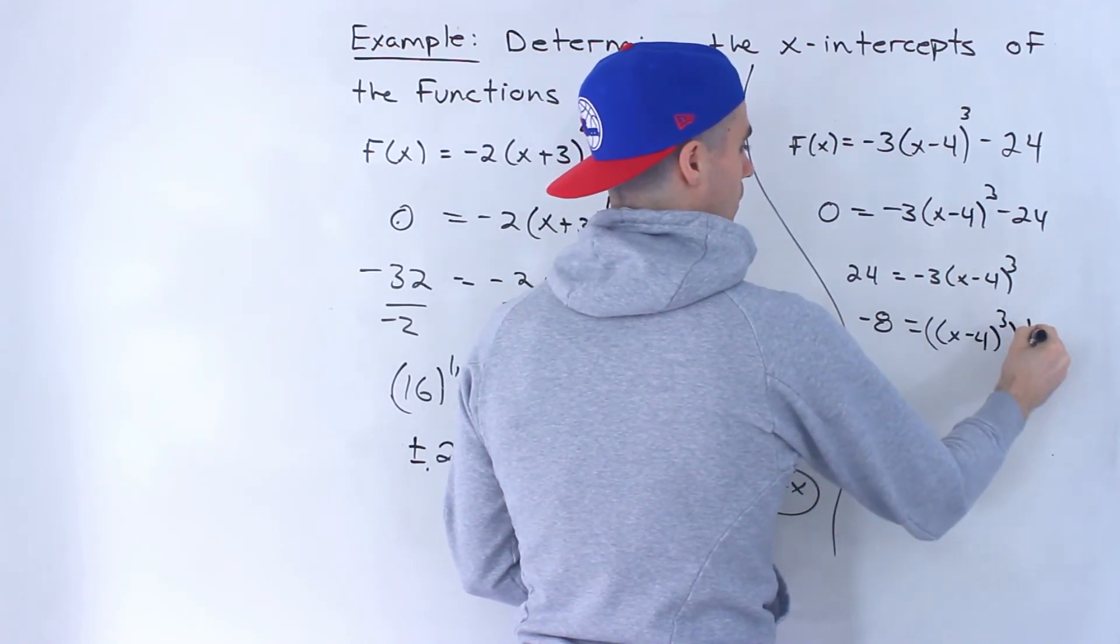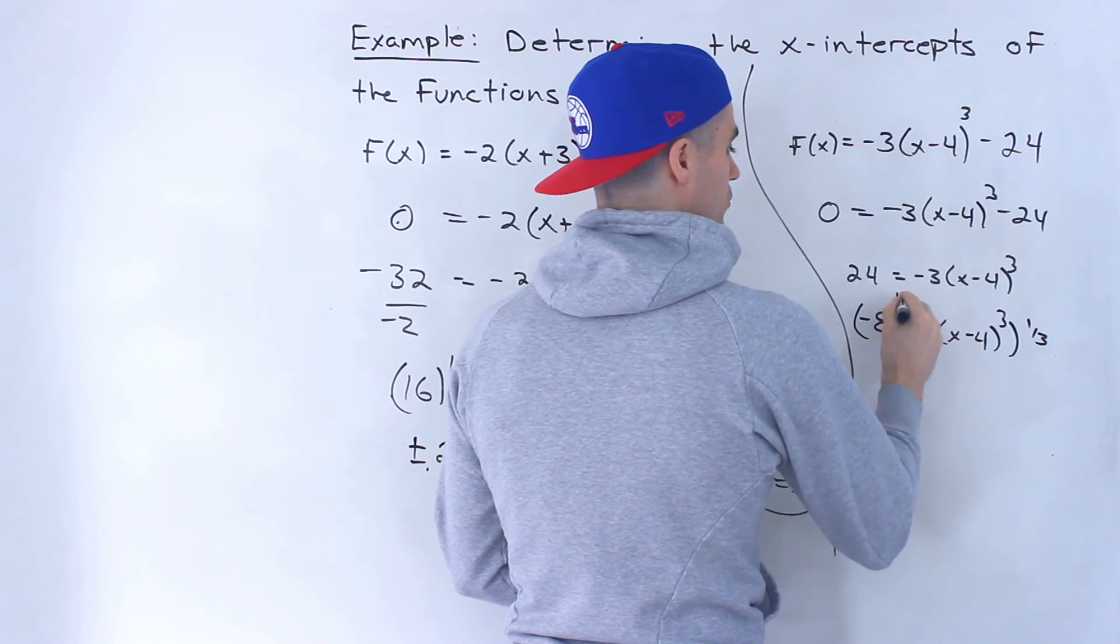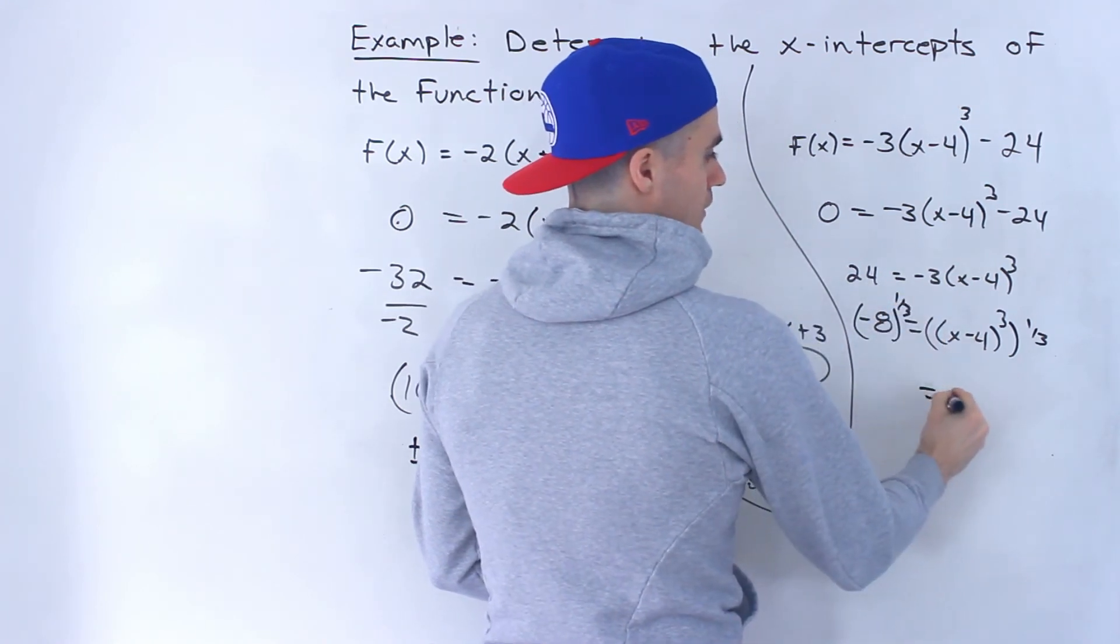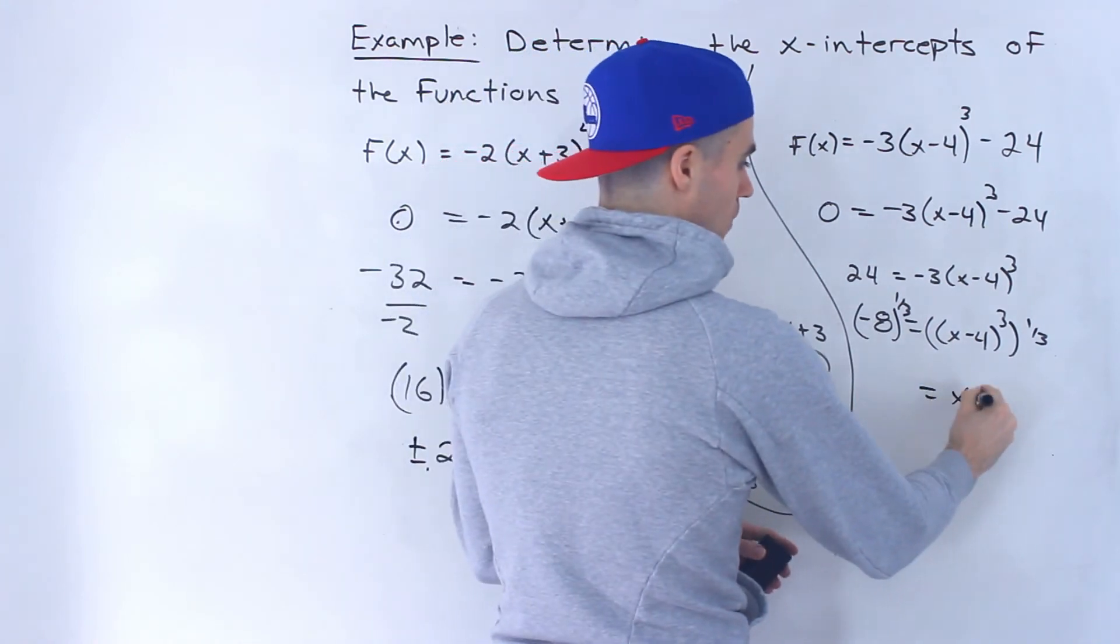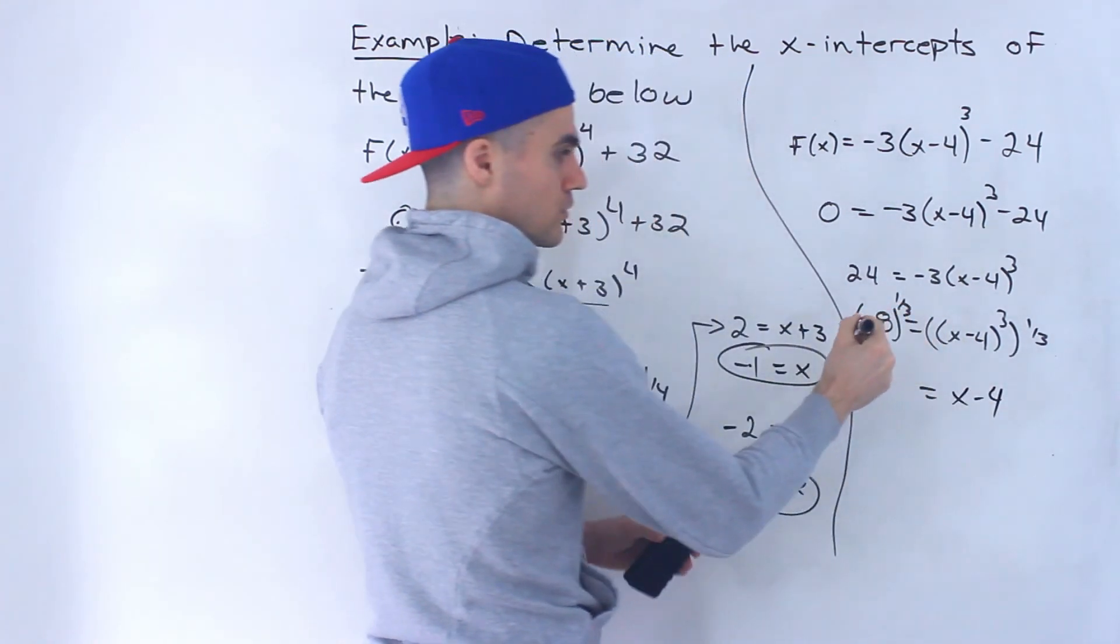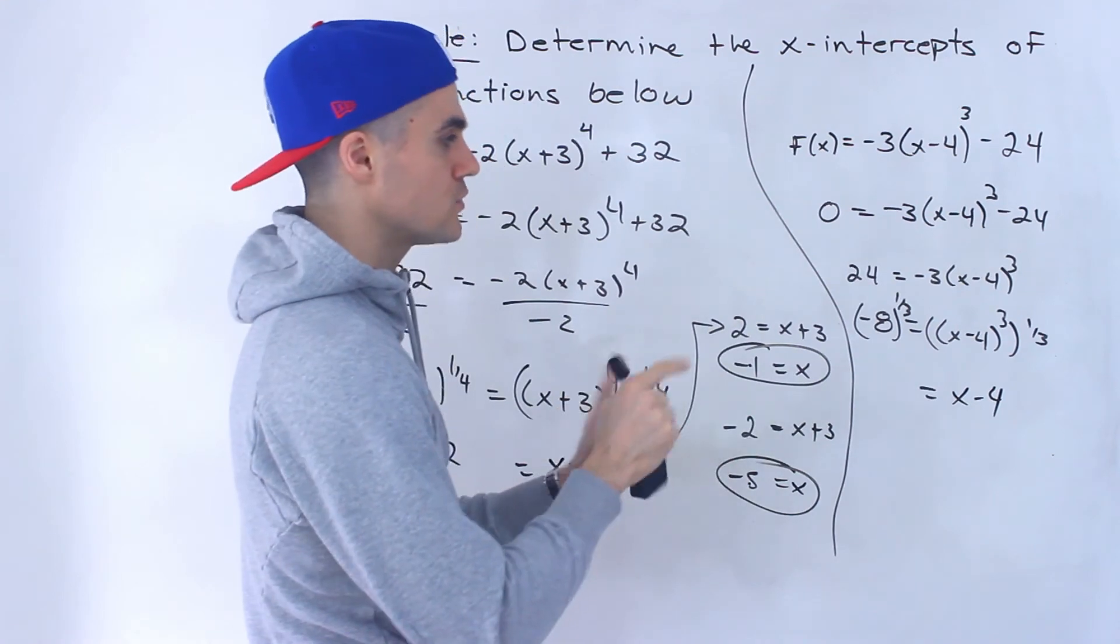Take both sides to the power of 1/3 or third root both sides. And this would end up being 3 times 1/3 is 1, x-4 to the power of 1 is just x-4. And then the 3rd root, an odd root, whether a 3rd root, 5th root, 7th root.